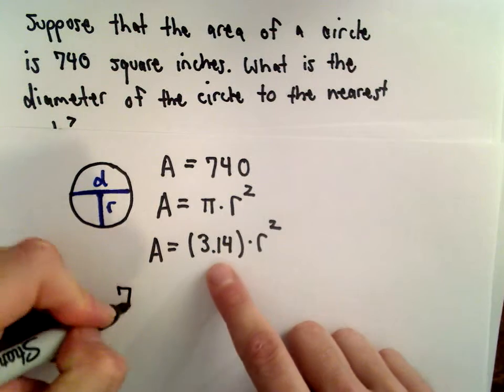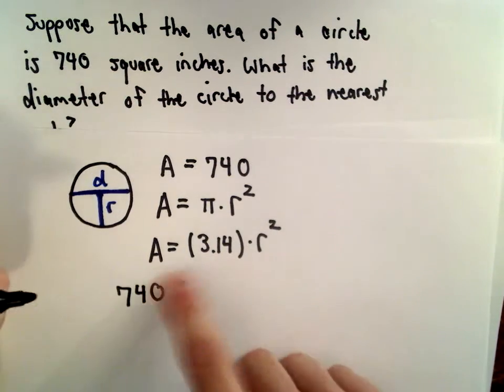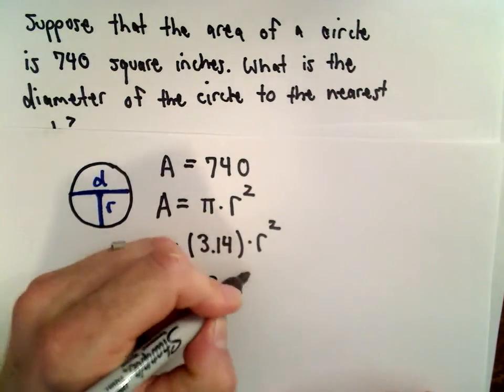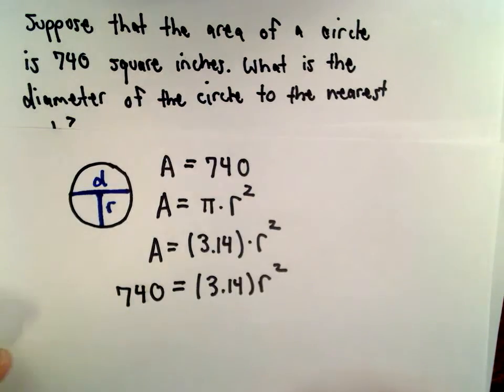Alright, so we've got 740, again, because that's the area. That equals 3.14 multiplied by r-squared.